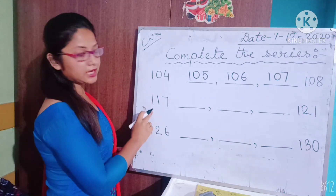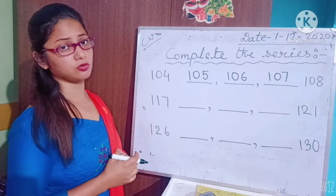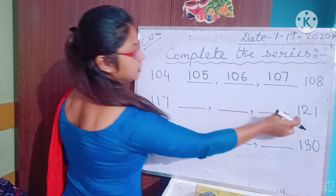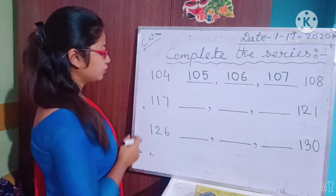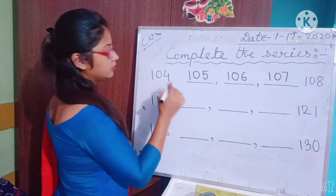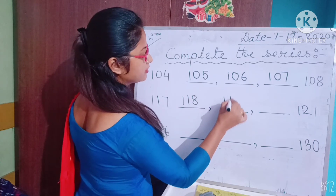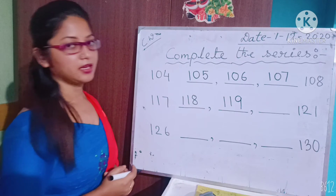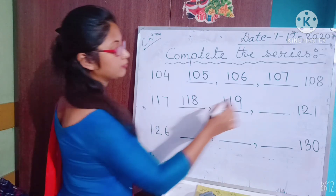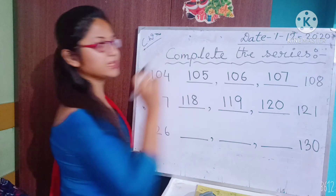Next series: 117. Which number comes after 117? 118. Then 119. Then 120 — 1, 2, 0. And the last number is 121.